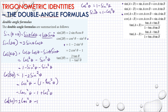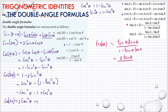How about tangent? Tangent 2θ — we can use the addition formula. So we have tangent theta plus tangent theta, divided by 1 minus tangent theta times tangent theta. That simplifies to 2 tangent theta divided by 1 minus tangent²θ.